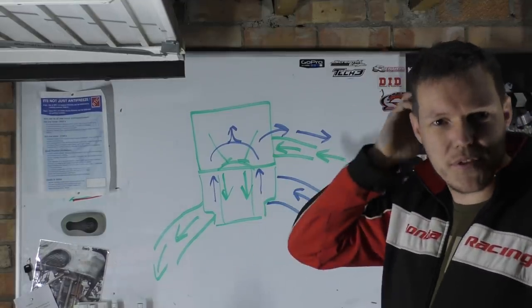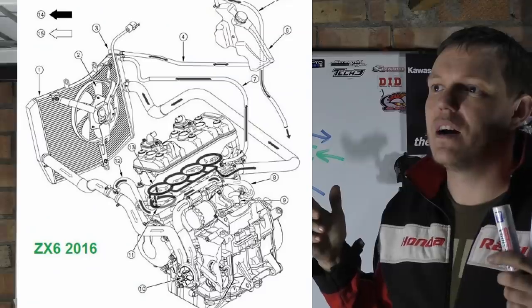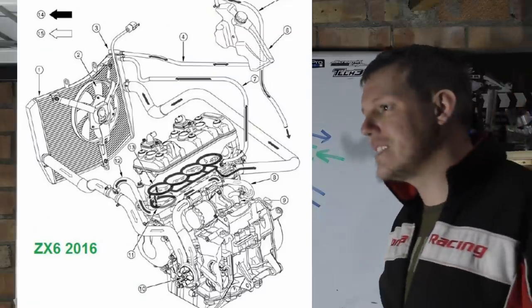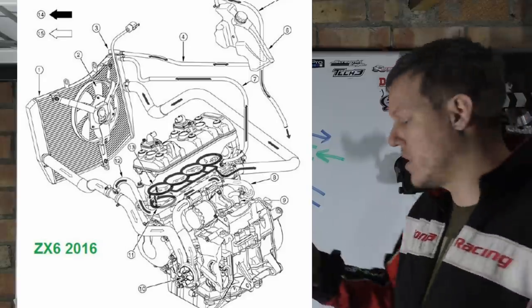I was thinking to myself, what the hell have they done this for? Then I went and got the manual for the ZX6 and the ZX9 and they have it, the blue arrows, the conventional way.